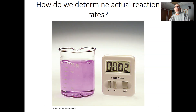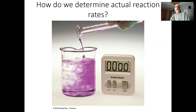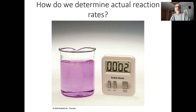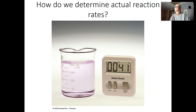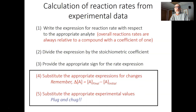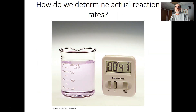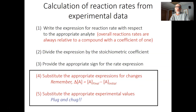Whenever you start — when you mix the reactants together — that's time zero. After two seconds it still looks the same. After 15 seconds it's lighter because one of the reactants has a pink or purplish color. After 41 seconds, almost all the color is gone. We can then use that to determine what the reaction rate would be, and we're going to see how to do that in a couple of different ways.